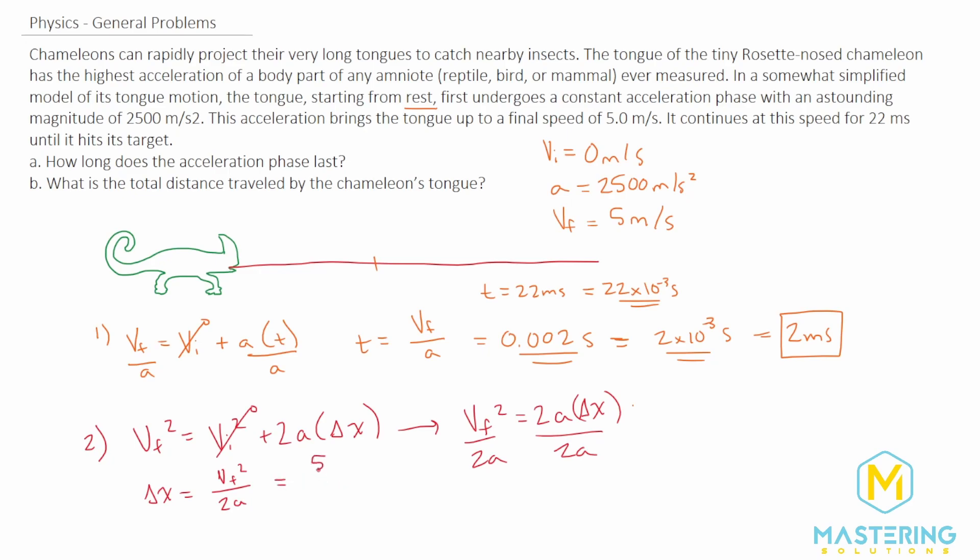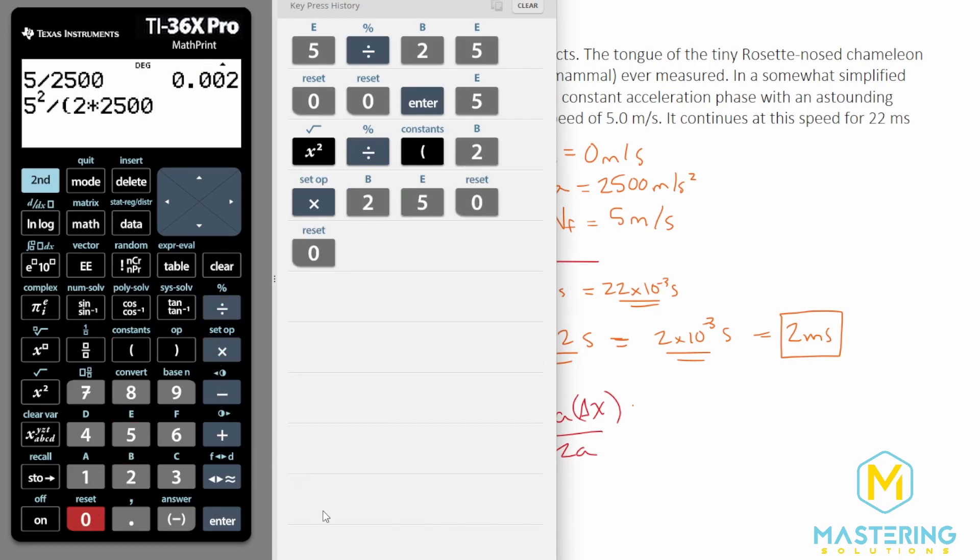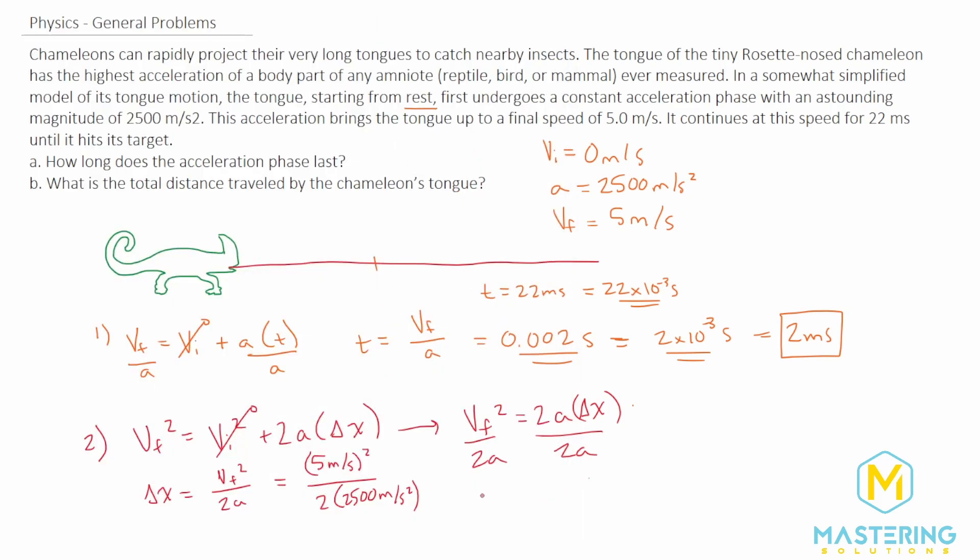The final velocity was 5 meters per second. We'll square that whole value and divide it by 2 times the acceleration of 2500 meters per second squared. 5 squared divided by 2 times 2500 gives us the total distance of 0.005 meters.